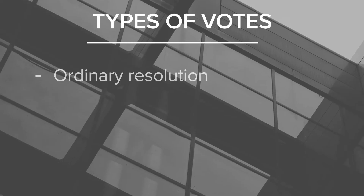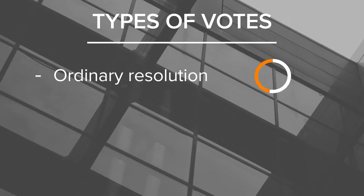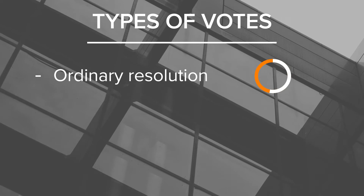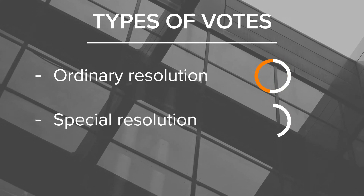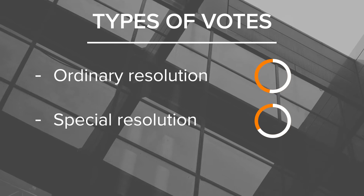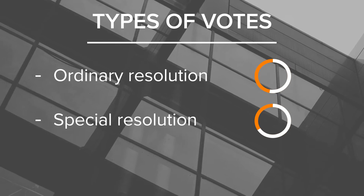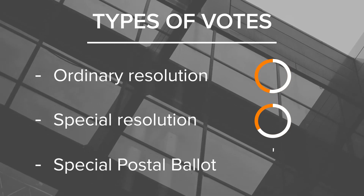Decisions are made in three ways: by an ordinary resolution, which is a simple majority; by a special resolution, which is a two-thirds majority at a general meeting or via postal ballot; and by a special postal ballot, which requires a three-quarters majority.